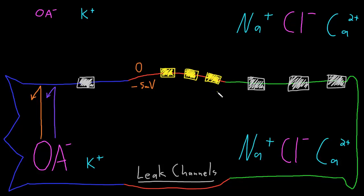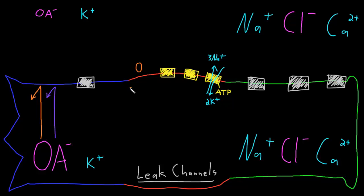The sodium-potassium pump is an active ion transporter. It uses the energy of one ATP molecule to actively transport three sodium ions outside the neuron in exchange for two potassium ions being transported inside the neuron. By moving more positive charges outside than inside, that's going to make the membrane potential bigger — more negative inside the neuron. It might be around negative 10 millivolts, but it's still probably too small for the neuron to function.